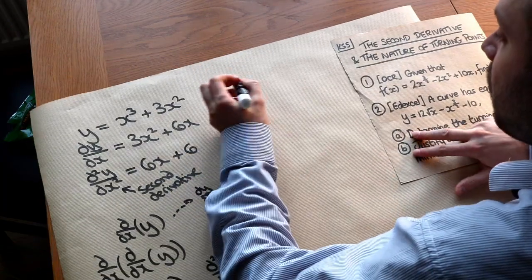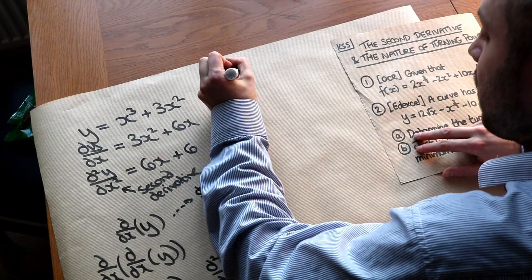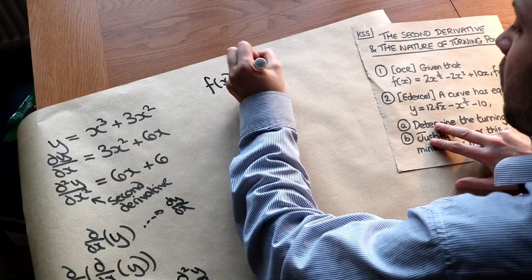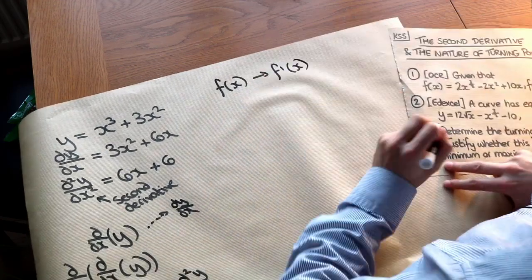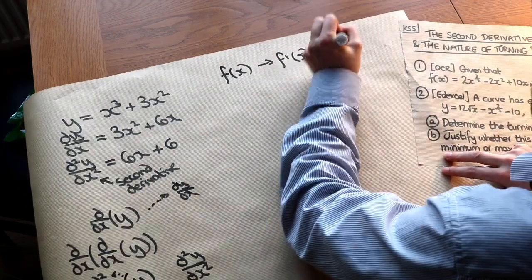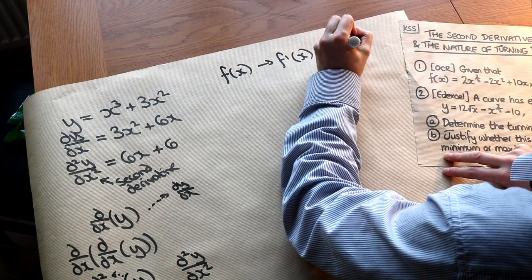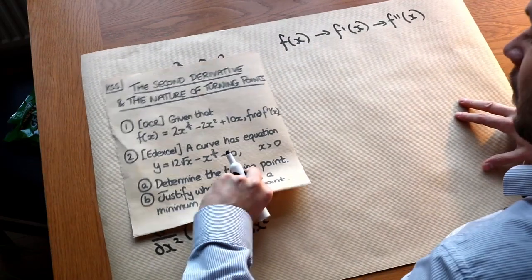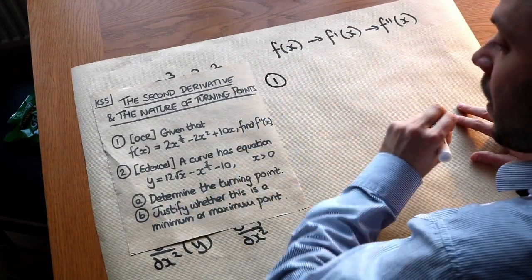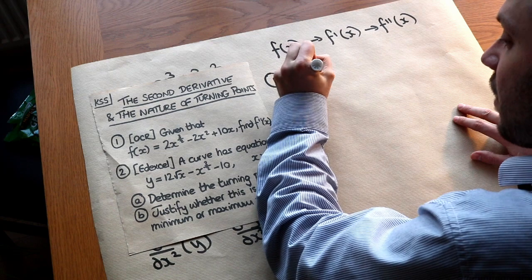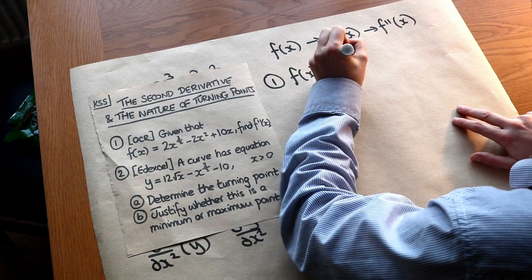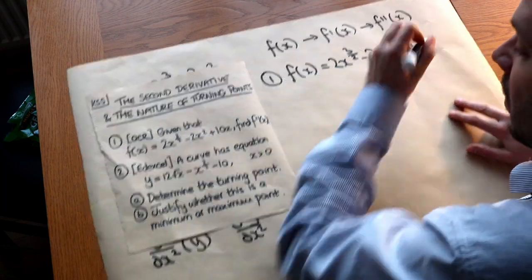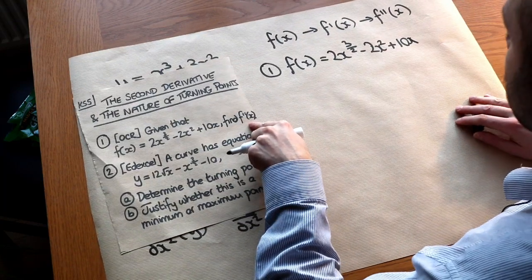You might be wondering: in functional notation, how do we write the second derivative? Well, when we differentiate f(x), we get f'(x). And if you differentiate again, that becomes f''(x), as you may have guessed. So let's use that to solve this first question — an OCR problem. Given that f(x) equals 2x to the 3/2 minus 2x squared plus 10x, find f''(x), the second derivative.